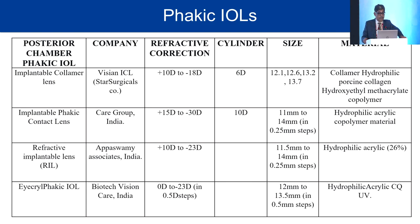Appasami offers their RIL in plus 10 to minus 23 diopters range. iKryl from Biotech comes in 0 to minus 23 diopters with 0.5-diopter steps, with sizing from 12 to 13.5 mm. Except for the ICL from STAAR—made of Collamer polymer—other lenses are made of hydrophilic acrylic co-polymer material.